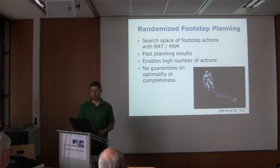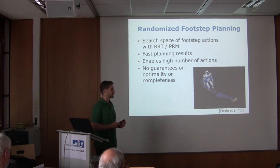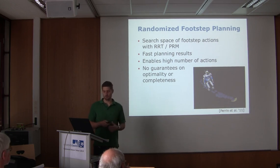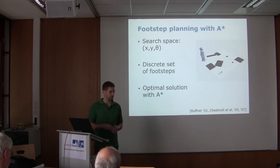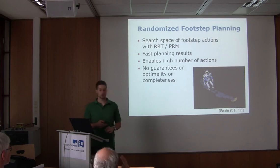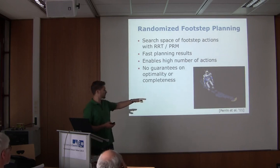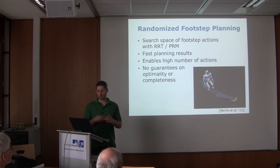Another method is randomized footstep planning, where we plan footstep actions with RRTs or PRMs. This gives us path planning results and we can have a high number of actions. With A* search we have a discrete set of footsteps — maybe 10 or 20 — because we don't want to impact search performance. Whereas with randomized methods, you can have 200 or more so-called half-steps that are concatenated. They use randomized methods because of the high branching factor.